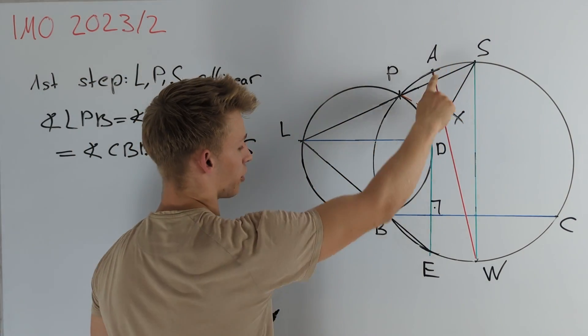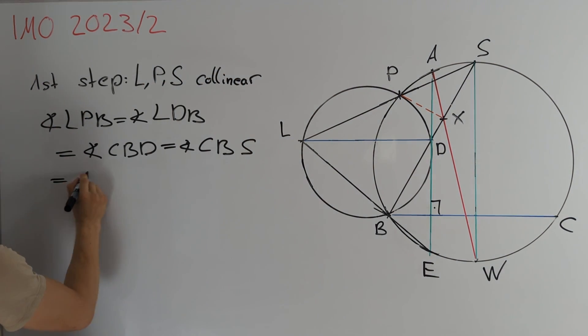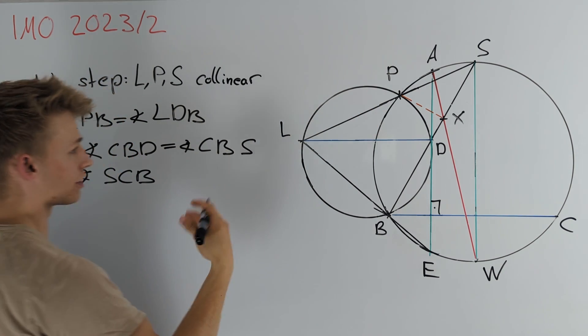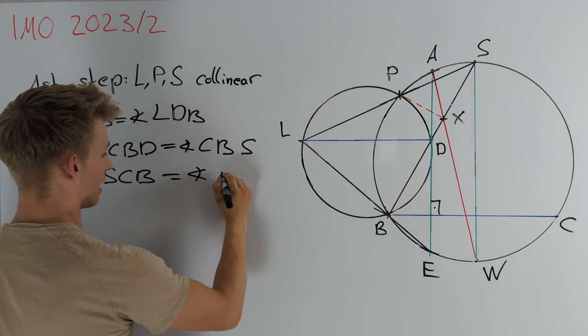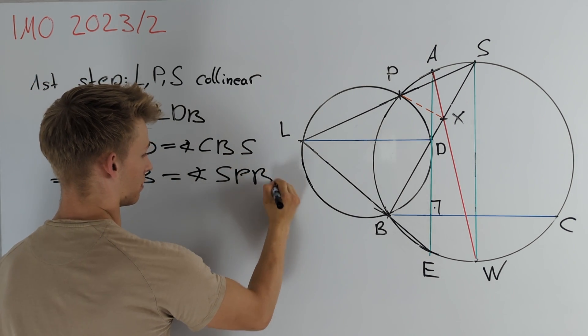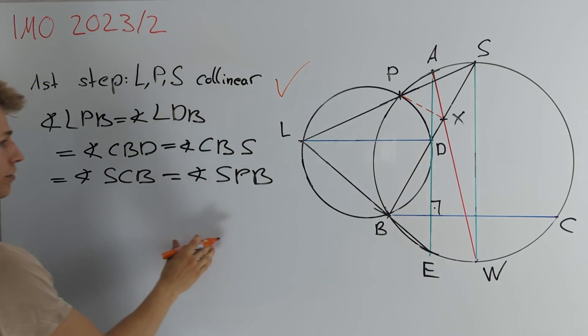Since S is the midpoint of the arc BC we know that angle CBS is equal to angle SCB and now we can use the fact that P lies on the circumcircle of triangle ABC to conclude that this is equal to angle SPB. This proves our first step which was the main observation for solving this problem.